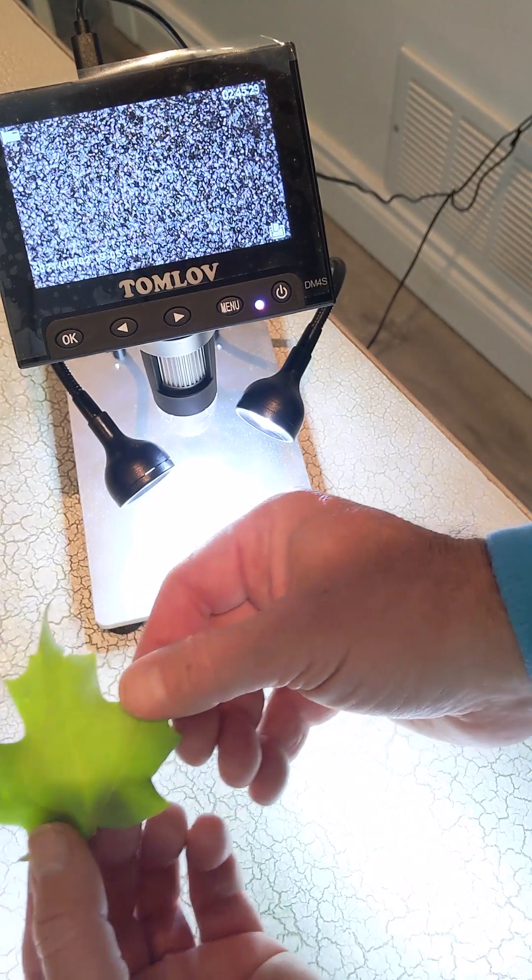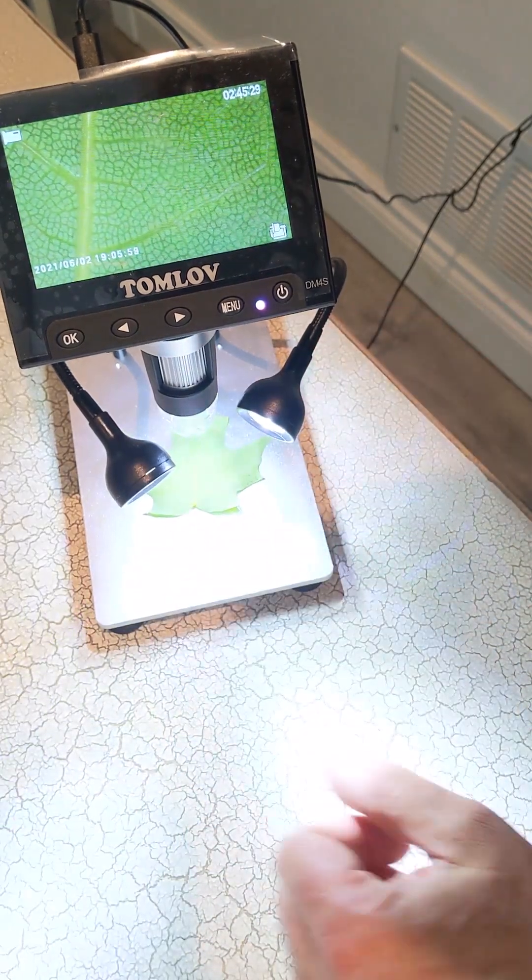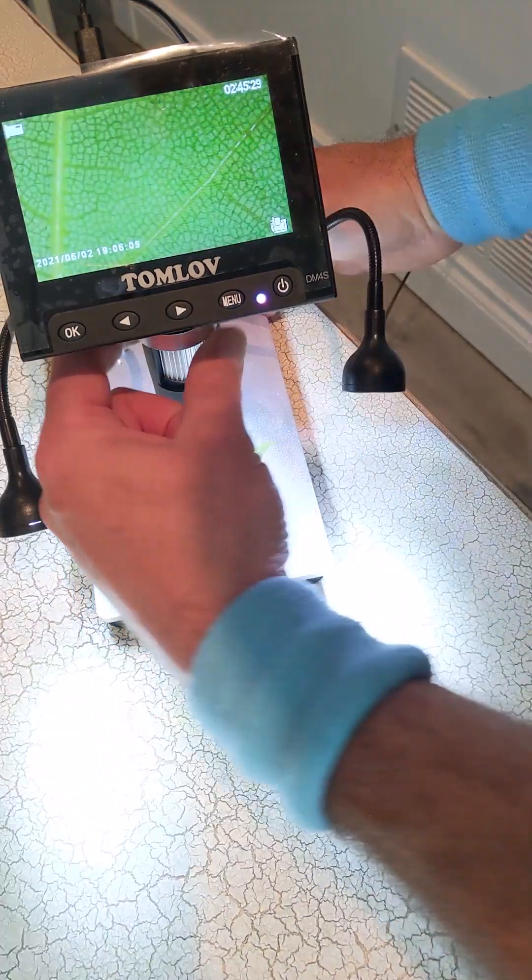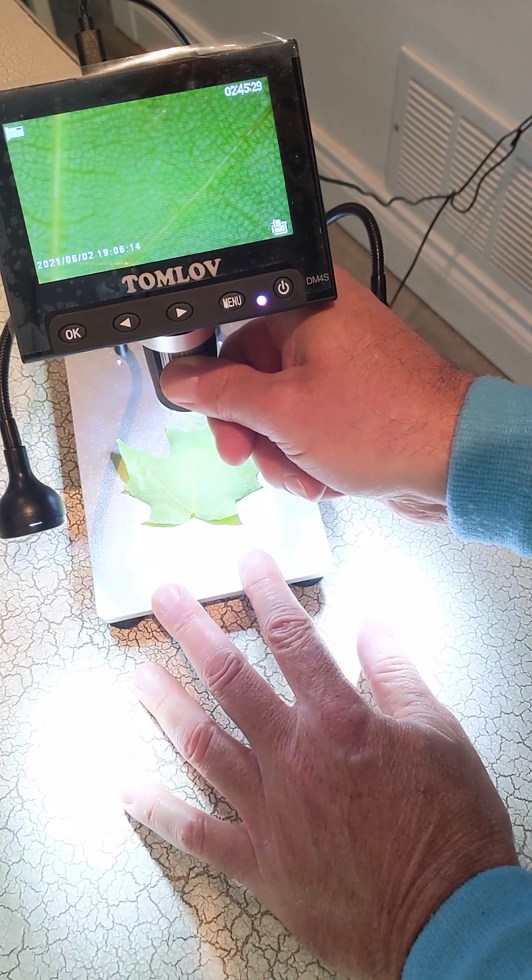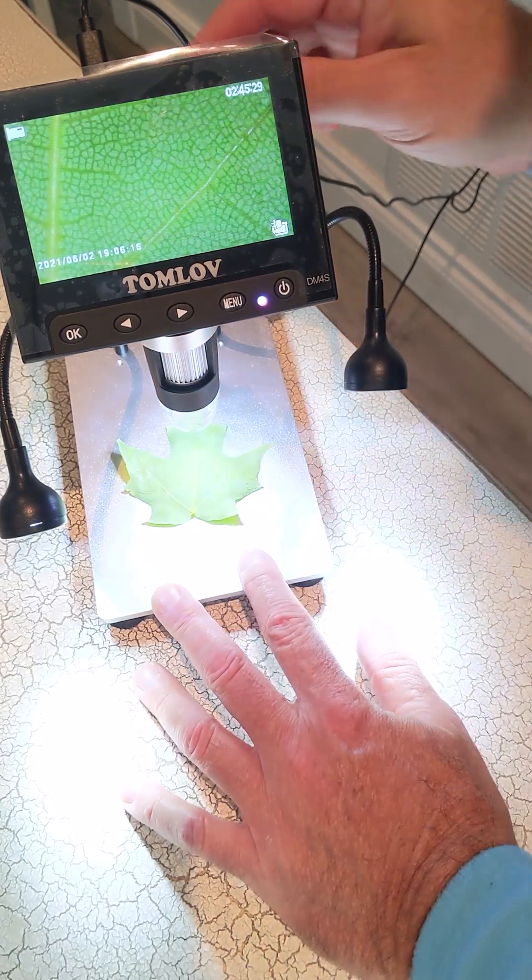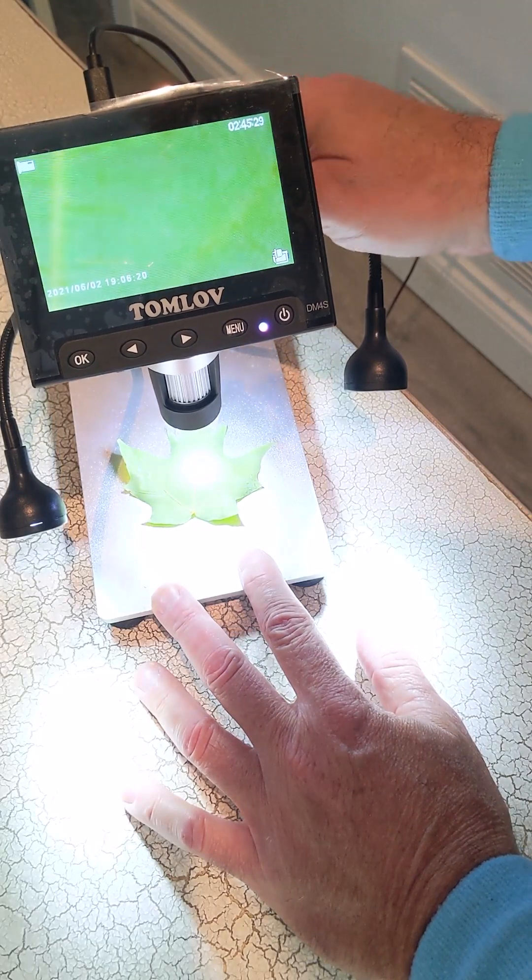Now I have a leaf here. So see what that looks like under here. So there's an idea of what that looks like. I'm going to focus that in. And then if you want to lower this to get more magnification, just lower this down.